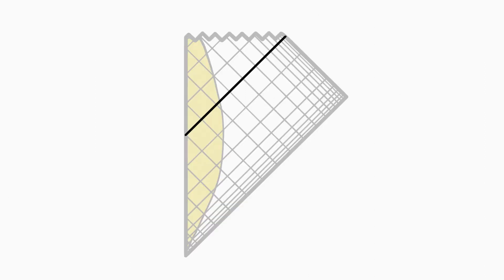This diagonal line is the event horizon, that famous line beyond which nothing, not even light can escape. Anything past this line cannot escape the singularity any more than you can escape tomorrow.